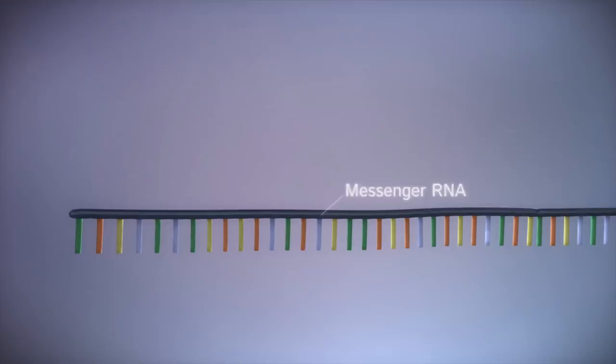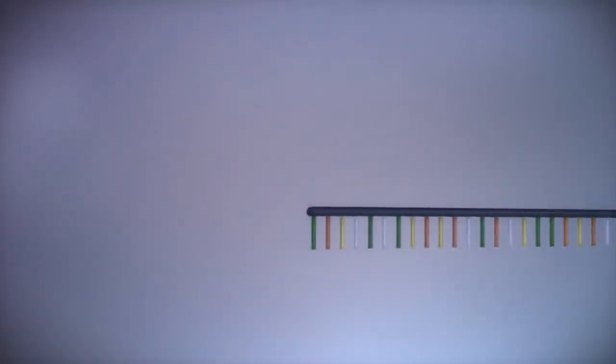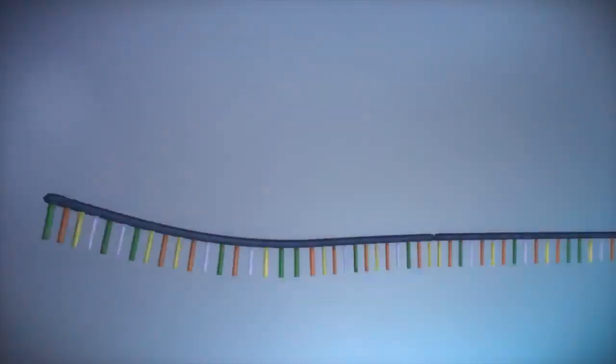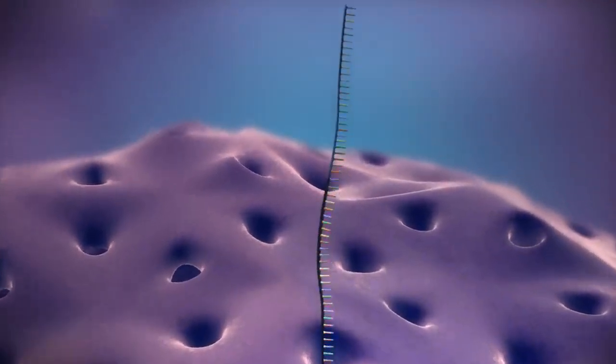Before the messenger RNA can be used as a template for the production of proteins, it needs to be processed. This involves removing and adding sections of RNA. The messenger RNA then moves out of the nucleus into the cytoplasm.